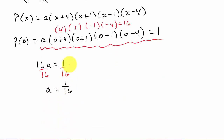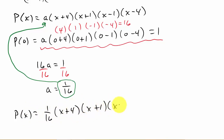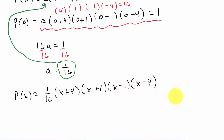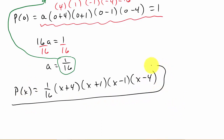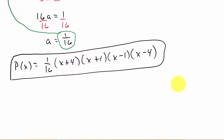Now I take 1 over 16 and plug it back in for a. So p of x equals 1/16 times x plus 4 times x plus 1 times x minus 1 times x minus 4. This could be your answer — in factored form.